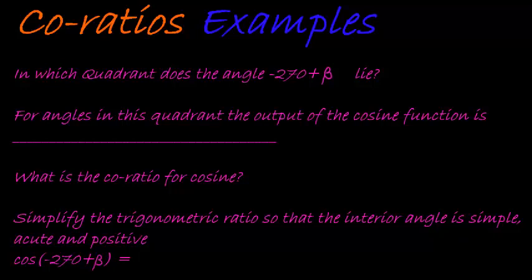Okay, so this is once again one of those examples that guides us step by step through the process of simplifying a trigonometric ratio with a certain angle. This time the angle inside that trig ratio is a negative angle that is made with the y-axis.